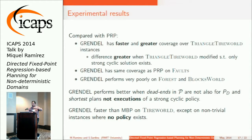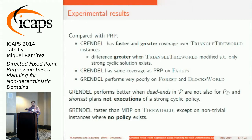Triangle tireworld has the property that the optimal plan in the all-outcomes determinization is not an execution of any strong cyclic policy. This difference became greater when we modified triangle tireworld to use the original action schema from tireworld, meaning the problem only admits strong cyclic solutions. We had the same coverage on folds, which is a diagnostic domain. We performed extremely poorly on forts, blocks, walls, and IPC benchmark-like problems. Why did Grendel perform better? Since we avoid the dead-ends entirely, PRP sometimes gets caught in dead-ends that are not dead-ends in the determinization but are dead-ends in the actual non-deterministic problem.